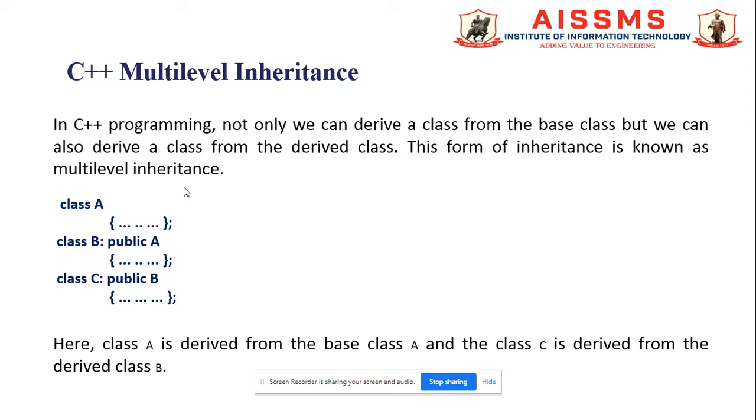You can see in this general syntax, class C is derived from class B and class B is derived from class A. So here class A is the parent class or super class. B and C are respectively their child classes.